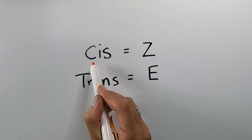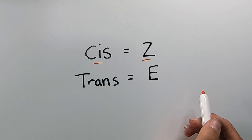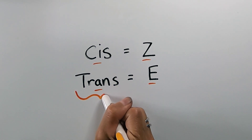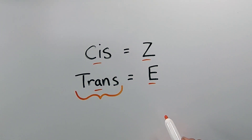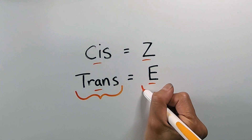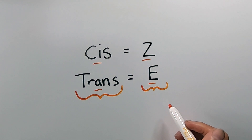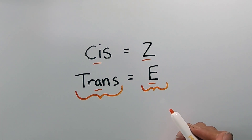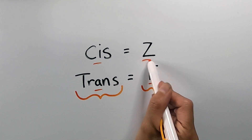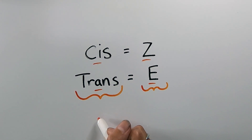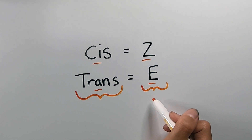Cis is the same thing as Z configuration, and trans is the same thing as E configuration. However, cis-trans nomenclature is used when we have two of the same substituents on the double-bonded carbons or ring structure, and EZ configuration is used when we have four different substituents on the double-bonded carbons or ring structures. So once again, cis is the same as Z, trans is the same as E, but if we have two of the same substituents we use cis-trans nomenclature. If we have four different substituents, we use EZ nomenclature.